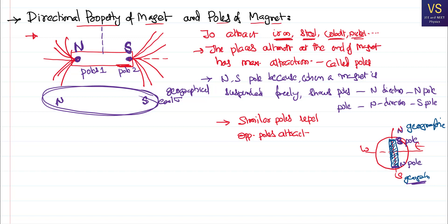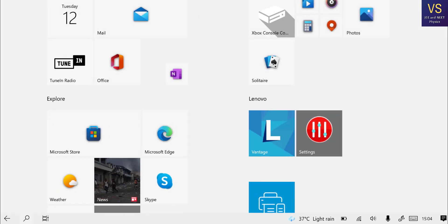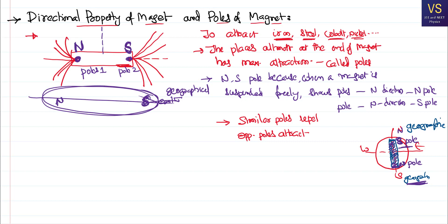They are not completely aligned as drawn — there is an angle between them, and we will talk about that later. The key point is that inside the geographic north and south of the earth, the earth behaves like a magnet having poles in the opposite direction. This north and south that I am showing right now are geographic north and south.